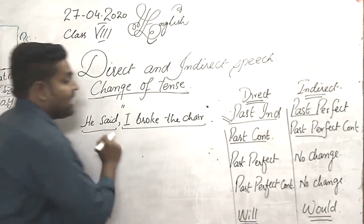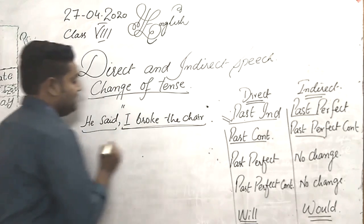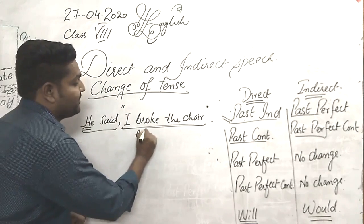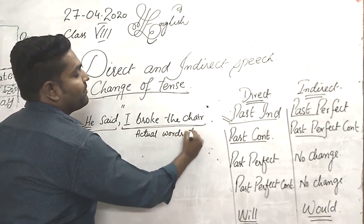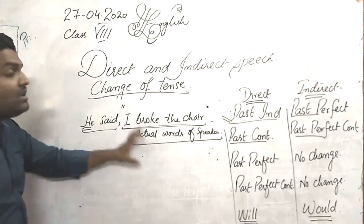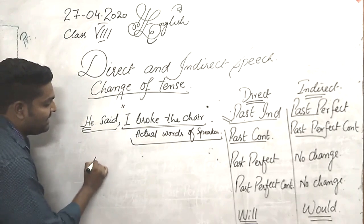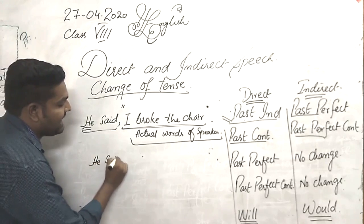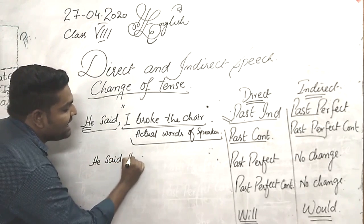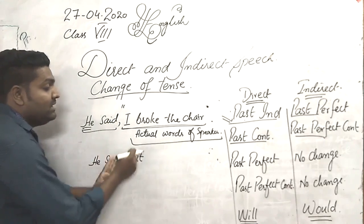So, 'I broke the glass' — this is the past indefinite. This is the sentence actually narrated by the speaker, or we can say these are the actual words of the speaker. Now we have to change these actual words into indirect speech. This clause, 'he said', will remain the same, but instead of a comma we use 'that' — T-H-A-T — to join the sentences.